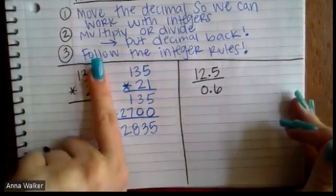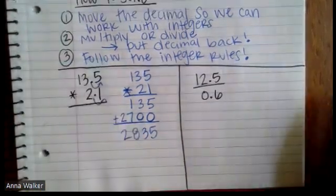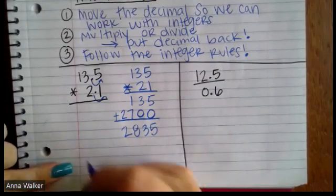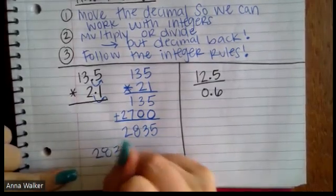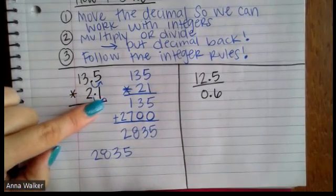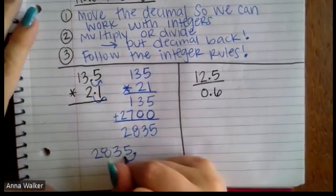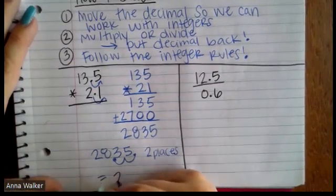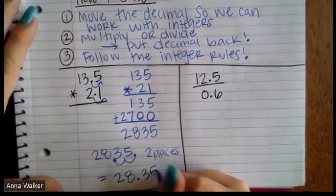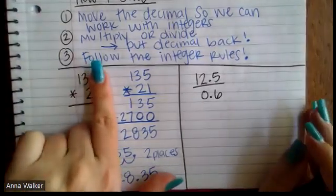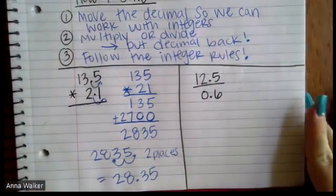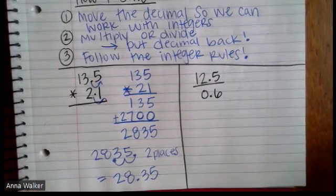However, that's not our answer, right? If we think about like 13 times 2, we shouldn't get something in the 2000s, right? So I'm going to go back and look at how many decimal places I have total. I have two decimal places total, right? There's one in 13.5 and there's one in 2.1. So I'm going to move my decimal two places in. So I'm just going to put two places over here. So the final answer is going to be 28.35, which makes sense if we kind of rounded 13 times 2 is 26. So it makes sense that our answer is somewhere around that, and we got 28.35. So don't forget to put your decimal back in your answer, but this is a way that you can rewrite it and do your multiplication with whole numbers.